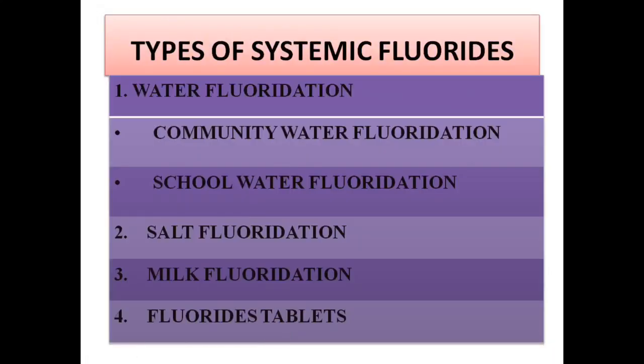We have various types of systemic fluorides. The common one is water fluoride, then salt, milk, and fluoride tablets. In water fluoridation, we have community and school water fluoridation — it is all consumed internally and enters the systemic circulation.